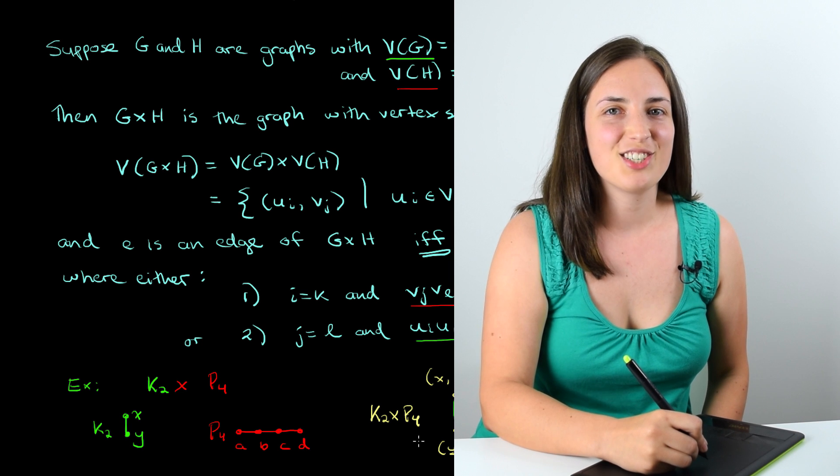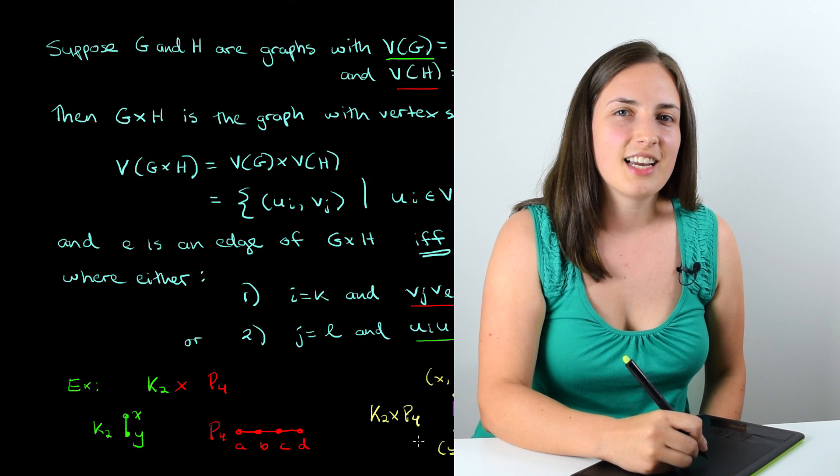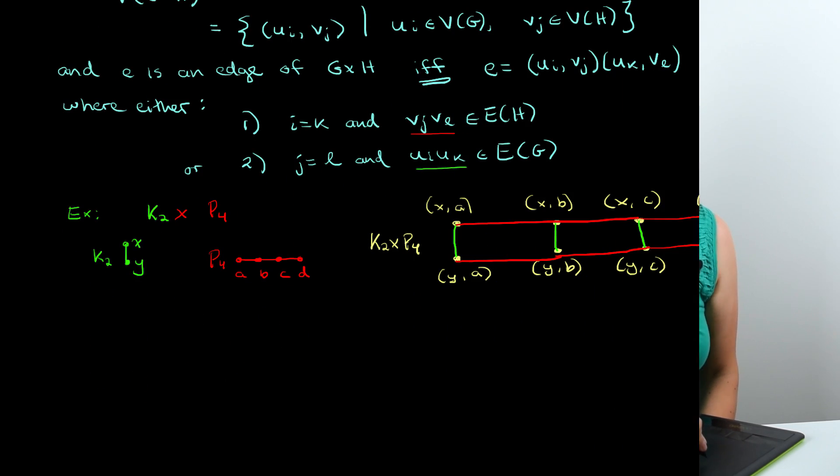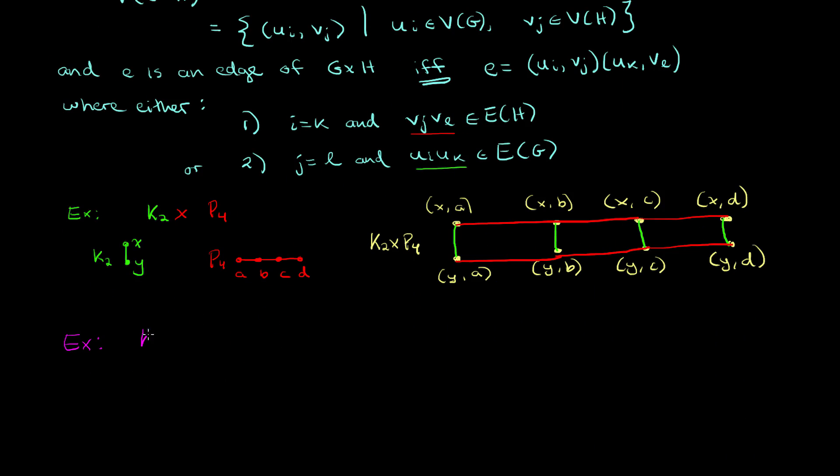As you can see, Cartesian products of graphs are pretty fun. Let's take a look at an example with a few more edges. So in this example, we have the Cartesian product of K4 with K3. Let's say that we label K4 with vertices x, y, z, and w. And let's give vertex labels a, b, and c to our K3.